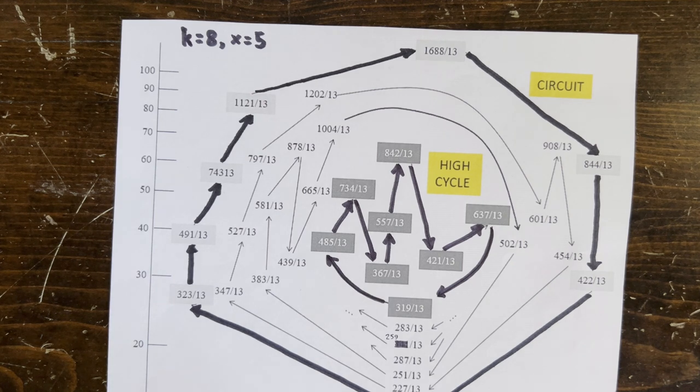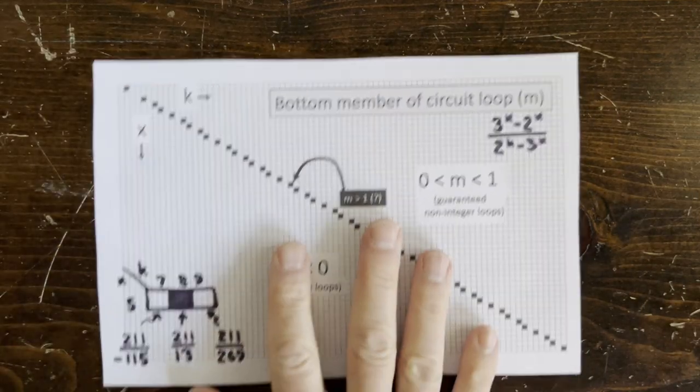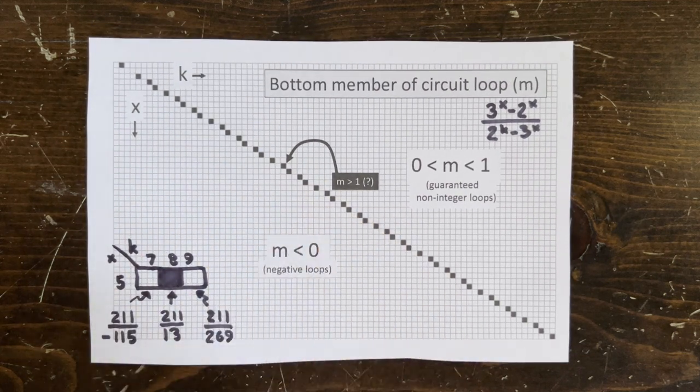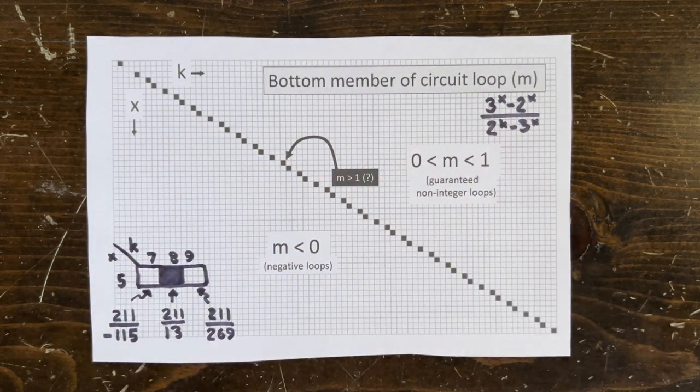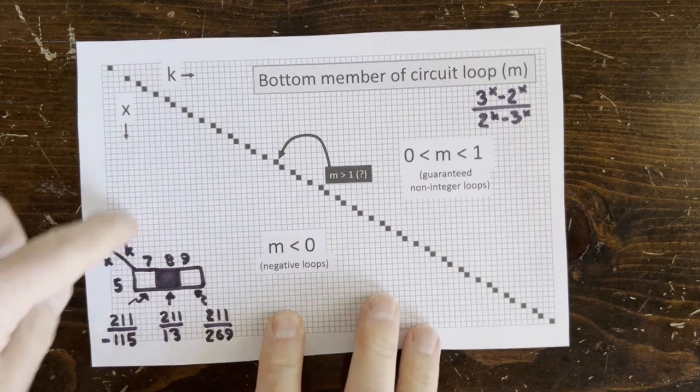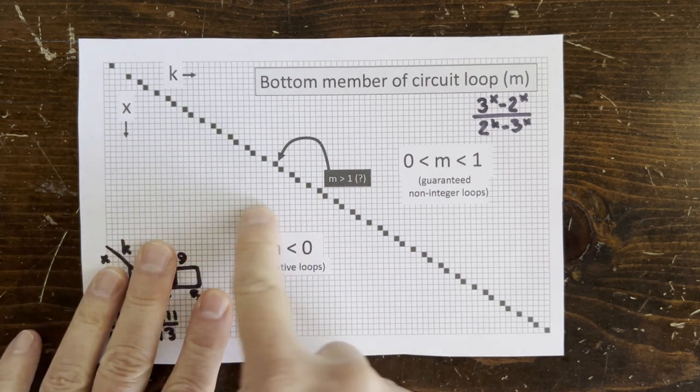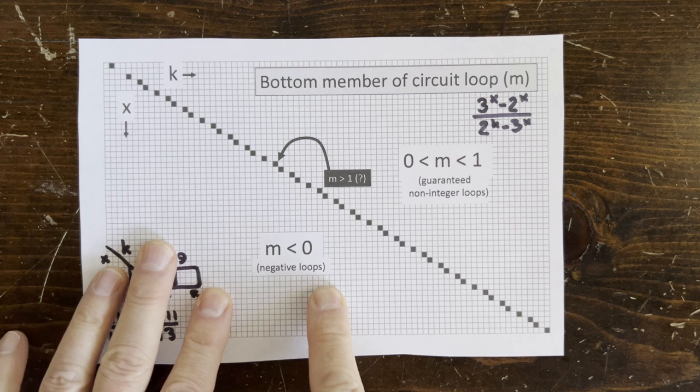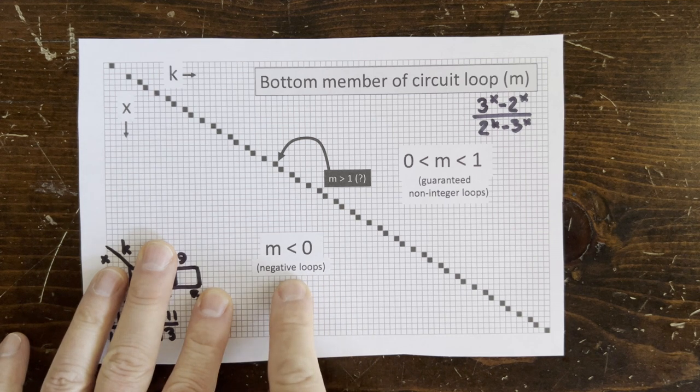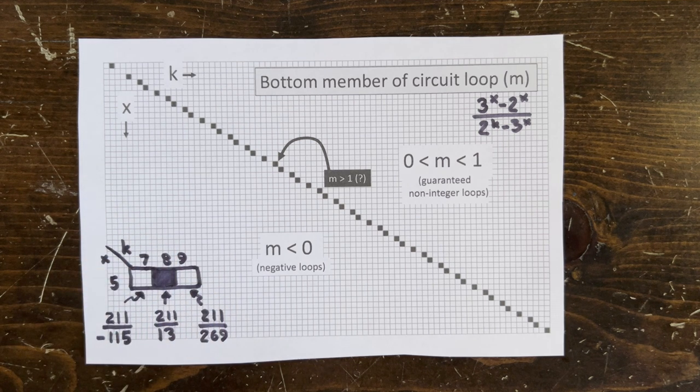So let's ask for how many kx pairs do we need to account. So here's an easy case first, the case of all circuit loops. Remember, the bottom of the circuit loop is 3 to the x times 2 to the x over 2 to the k minus 3 to the x. And on the left side are values of x, and across the top, values of k. Now everything in this region down here where k is less than ceiling x log 3, the denominator is negative, so the bottom member of the circuit is also negative. And we don't need to check those.